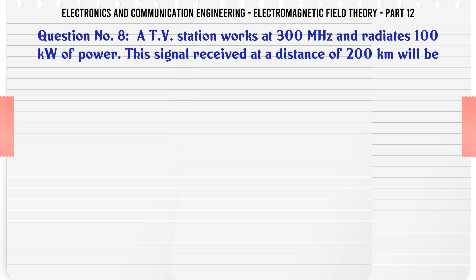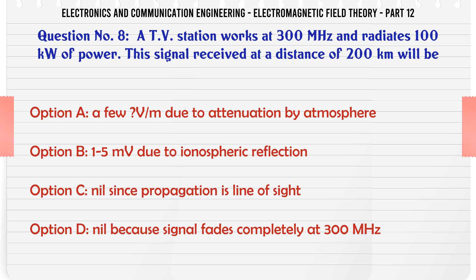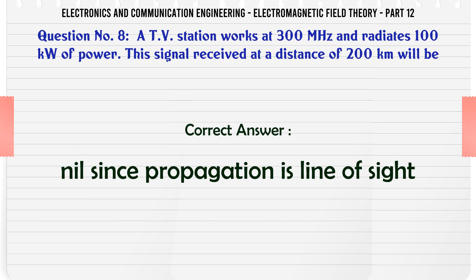A TV station works at 300 MHz and radiates 100 kW of power. The signal received at a distance of 200 km will be: A. A few V/m due to attenuation by atmosphere, B. 15 mV due to ionospheric reflection, C. Nil since propagation is line of sight, D. Nil because signal fades completely at 300 MHz. The correct answer is Nil since propagation is line of sight.